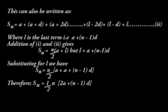This can also be written as follows, where L is the last term, that is, A plus N minus 1 times D. Adding equation 1 and equation 2 will give us Sn is equal to a half N into 2A plus N minus 1 times D. This is the formula for finding the sum of a series of numbers.